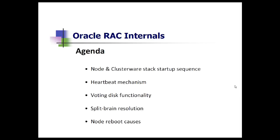Considering the time limitation and the amount of topics to be covered in this session, we are going to focus on limited but important topics in each segment. In this RAC Internals segment, I'm going to cover the following topics: what happens when a node comes up and how the cluster stack startup sequence works, the heartbeat mechanism and the importance of it, the functionality of voting disk and why we use voting disk, a bit on split-brain resolution, and finally an outline of a few node reboot causes.